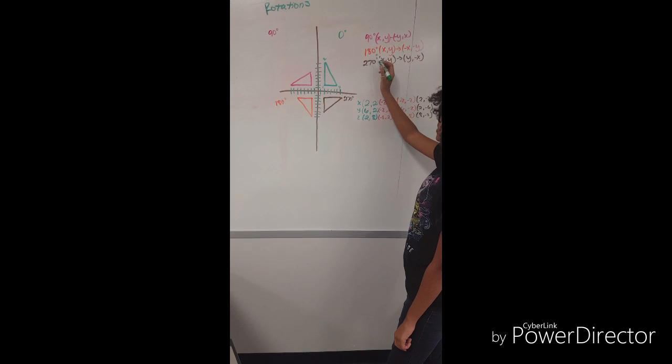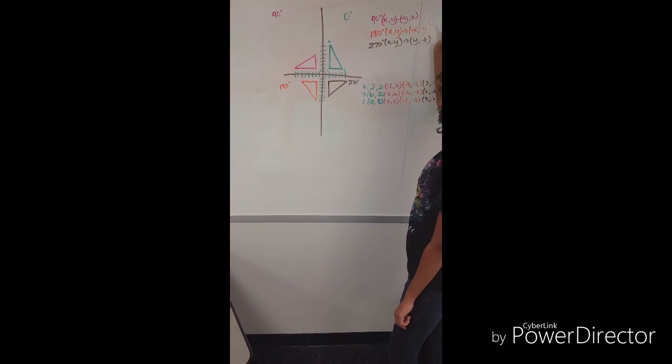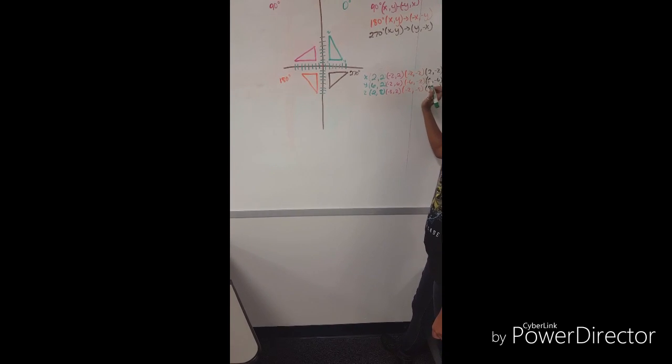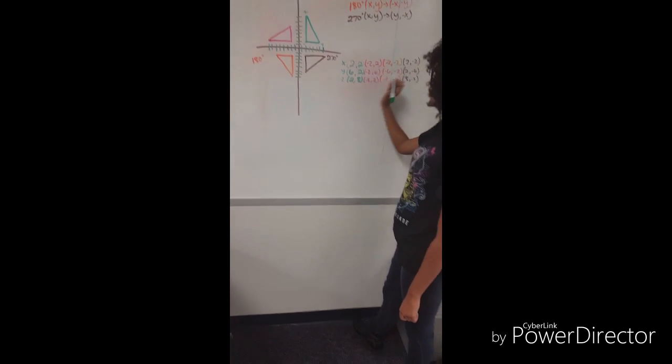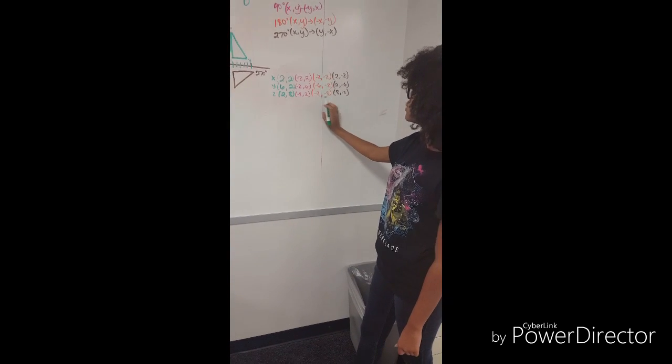And if you were to rotate 180 degrees, it will go from x, y to negative x, negative y. So 2, 2 will then become negative 2, negative 2. 6, 2 will then become negative 6, negative 2. And 2, 8 will become negative 2, negative 8.